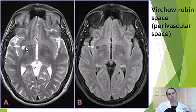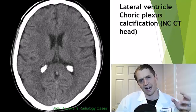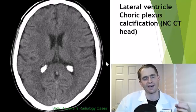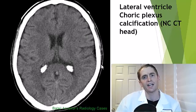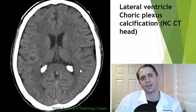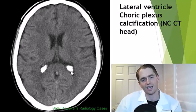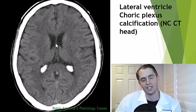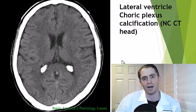Sometimes they can be quite enlarged and prominent. Moving back to calcifications, another area that's common to get heavy benign calcification is in the choroid plexus. This is actually a CT scan — I couldn't find a good example on MRI — but these heavily calcified areas are actually the normal choroid plexus, the tissue that creates the cerebrospinal fluid.